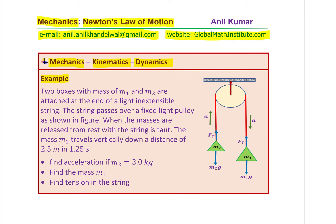The example here is: two boxes with mass M1 and M2 are attached at the end of a light inextensible string. The string passes over a fixed light pulley as shown in the figure. These are the two masses attached with this light string which goes over the pulley. When the masses are released from rest, the mass M1 travels vertically down a distance of 2.5 meters in 1.25 seconds. Find acceleration if M2 is 3 kg, find mass M1, and find tension in the string.